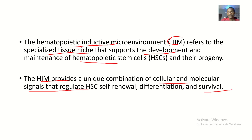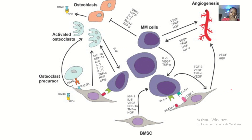This microenvironment is basically what supports the process of hematopoiesis — the main pillar of hematopoiesis. Because if the microenvironment is not there, then what is needed for hematopoietic stem cell renewal, differentiation, and survival will not be there. These are the various stimulatory factors and some inhibitory factors.